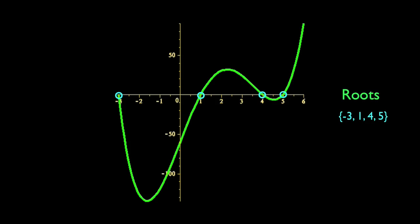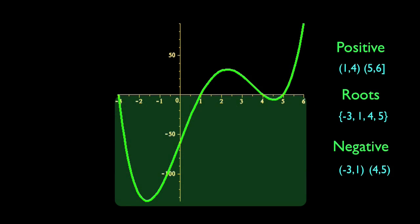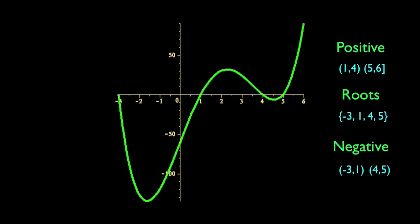For continuous functions, the intervals between the roots, or between an outside root and an endpoint, have to remain either positive or negative. Together, the regions where the function is 0, positive, and negative, make up the entire domain.